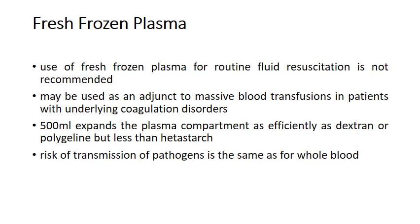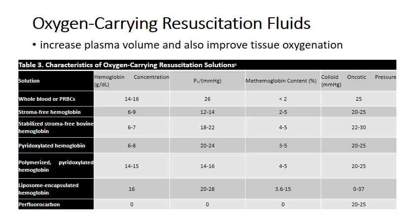Fresh frozen plasma - although its use for routine fluid resuscitation is not recommended - may be used as an adjunct to massive blood transfusions in patients with underlying coagulation disorders. 500 ml of FFP expands the plasma compartment as efficiently as dextran or polygeline, but less than hetastarch. The risk of transmission of pathogens by FFP is the same as that of whole blood, which we need to keep in mind.